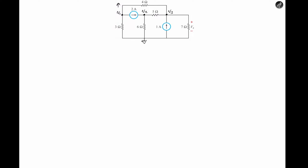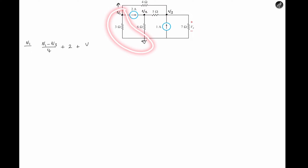And the current I3, flowing in that direction, would just be V1 divided by the 3-ohm resistor. So let's apply KCL at each terminal. At terminal V1, applying KCL, we have V1 with reference to V3 all over the 4-ohm resistor, plus a 2-amp current leaving terminal V1 — that is positive 2 — plus V1 with reference to ground, which is V1 over 3, and that is equal to 0.